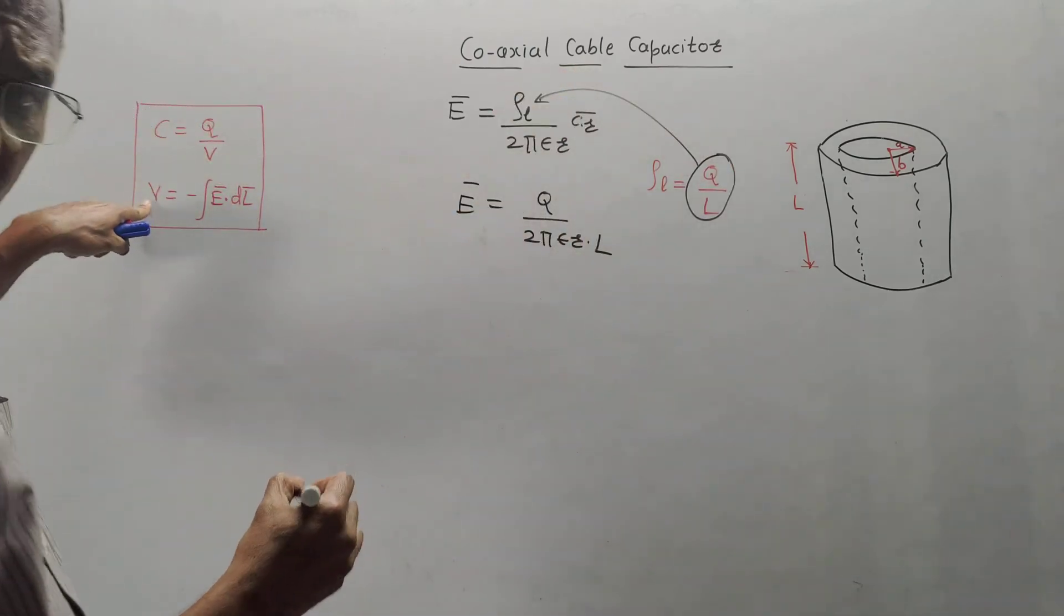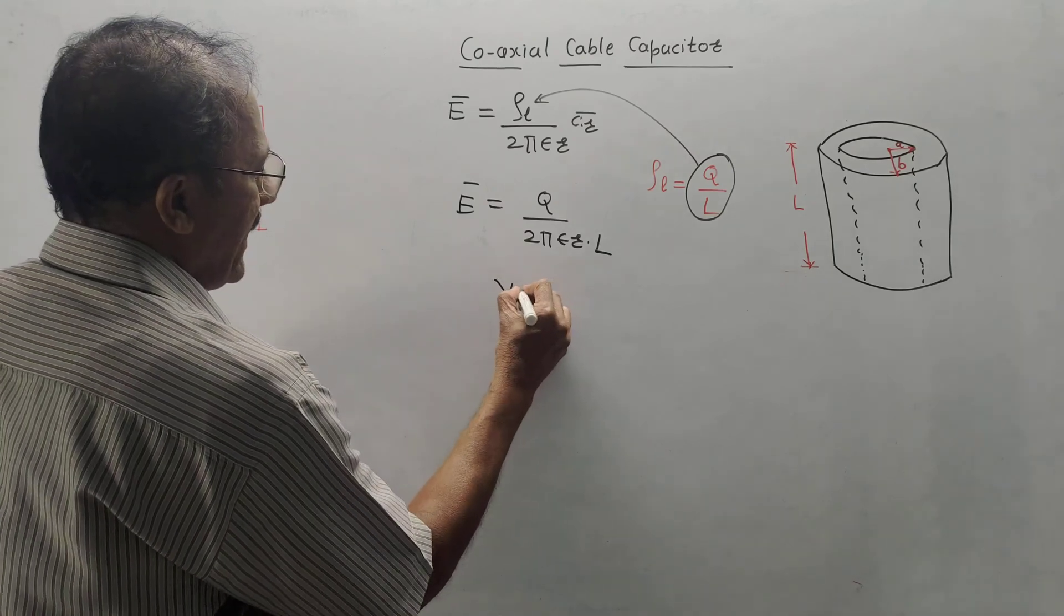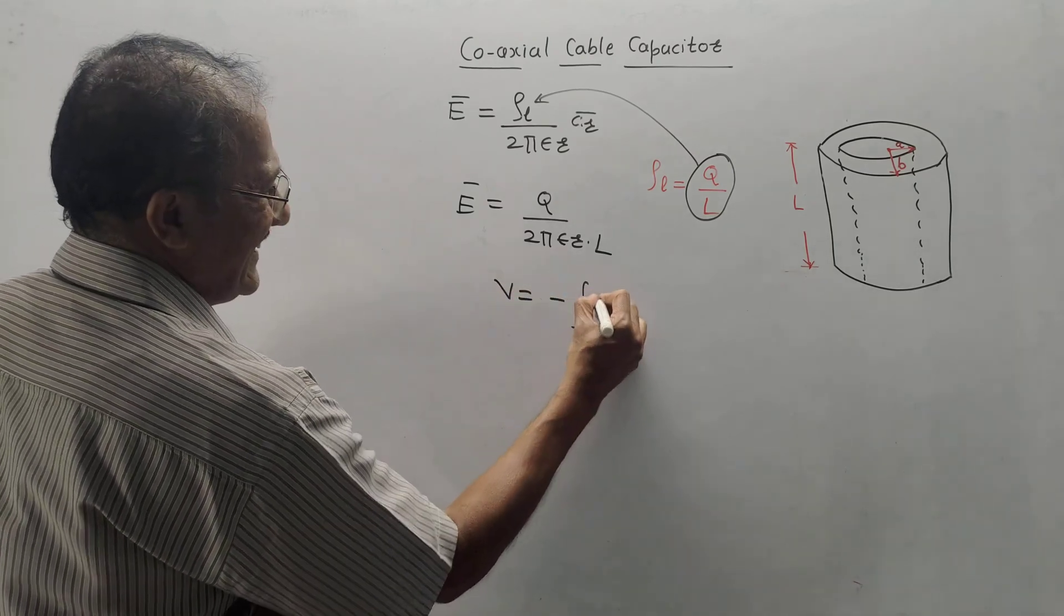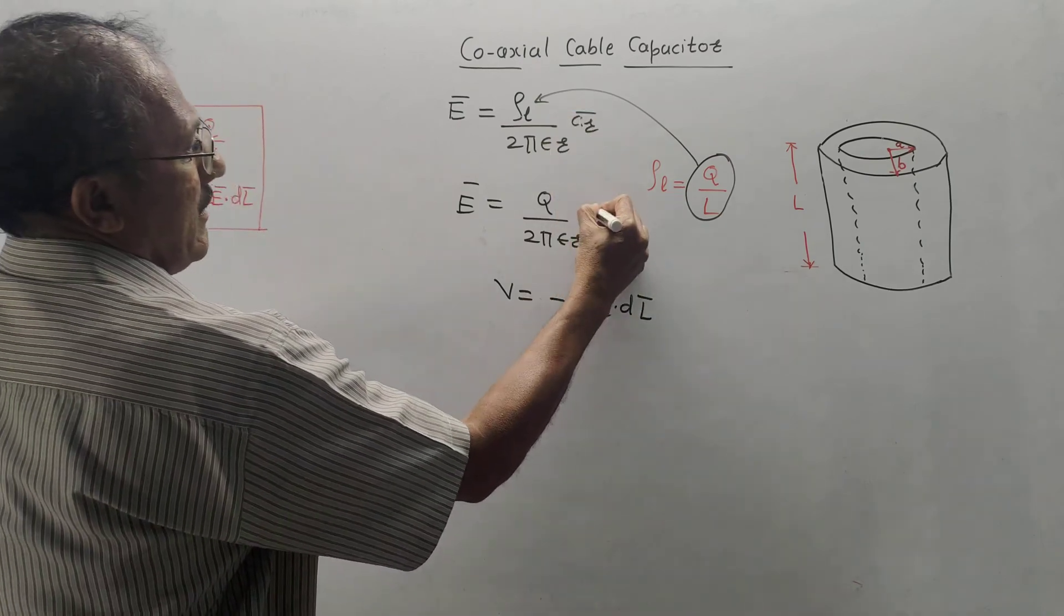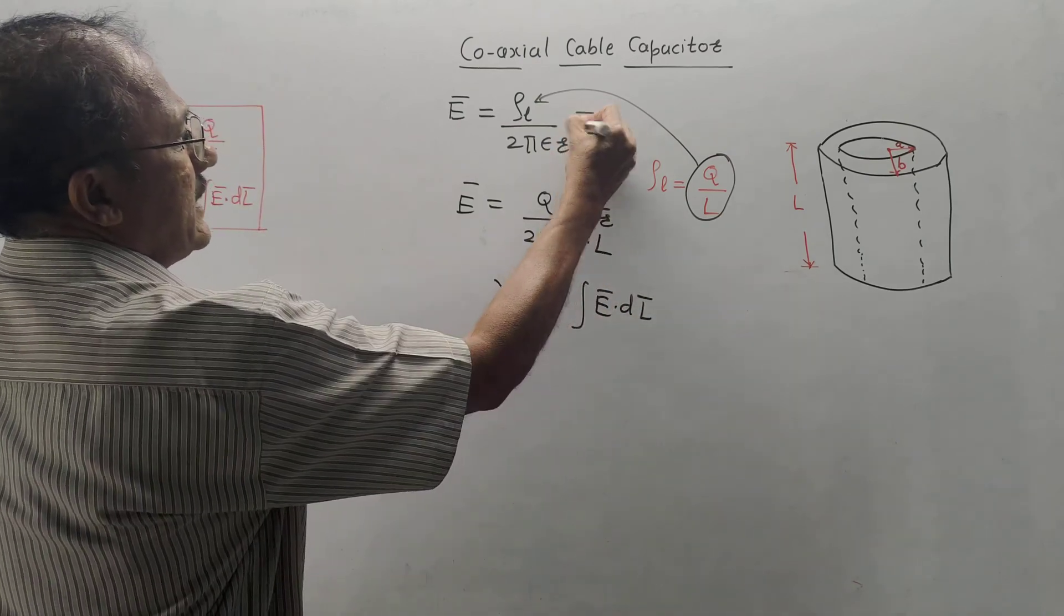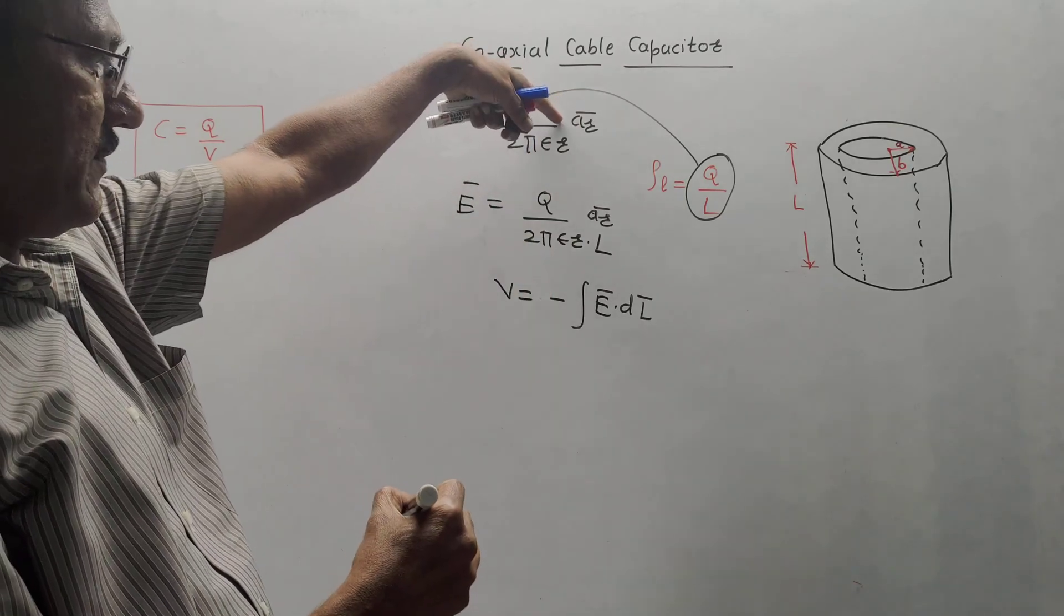Now, calculate equation of voltage. I am writing equation of voltage minus integration e bar dot D L bar. Also, include direction in this case, which we have written in first equation.